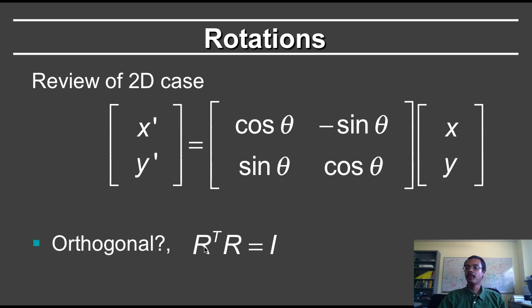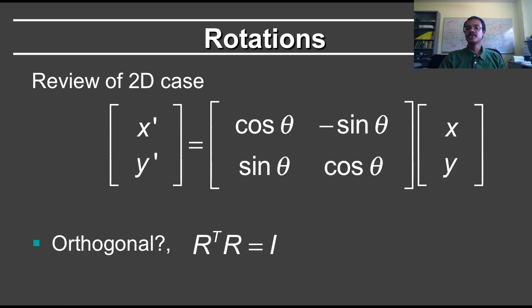One of the important properties of this matrix, which we haven't talked about so far, is that it's orthogonal. Most directly, that means R transpose R is the identity, and in fact we can multiply that out explicitly. I'm just going to use C for cosine and S for sine. The transposed matrix will be given by cos, sine, minus sine, cos.